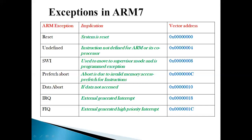Similarly, data abort is also about a memory operation but due to non-accessibility of data. The vector address for data abort is 0x000010. All these vector addresses differ by 4 because ARM7 works on 32 bits. Each memory location size is 8 bits, so 8 multiplied by 4 equals 32, which is why the difference of 4 occurs between all the memory addresses.